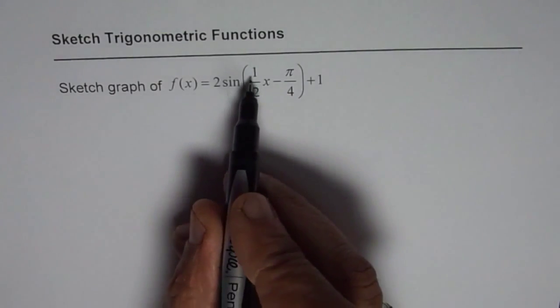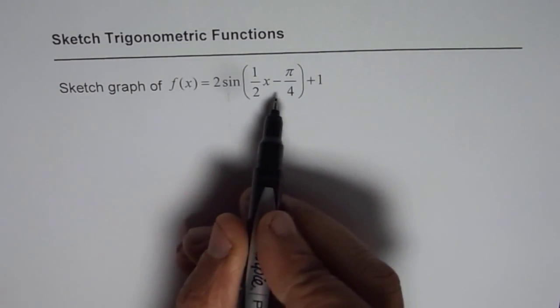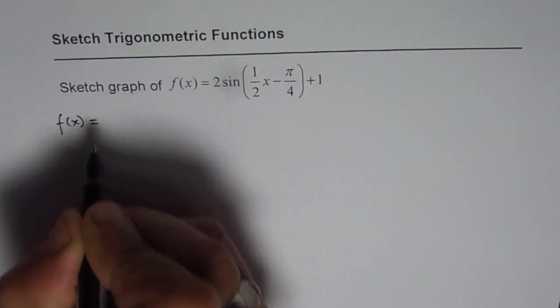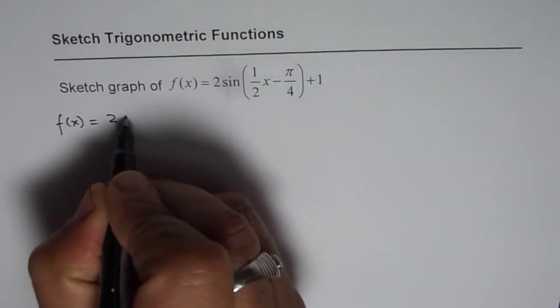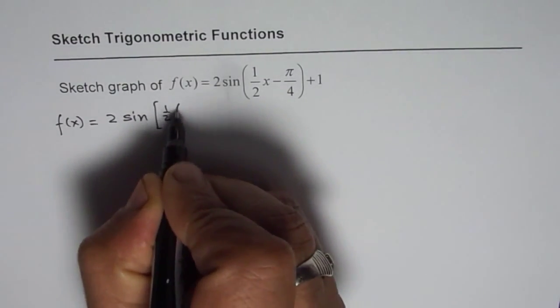Now we should actually factor this half so that we know exactly what is the horizontal translation. So let me write down this function again after factoring. We get f of x as 2 times sine of half x.